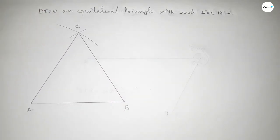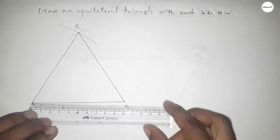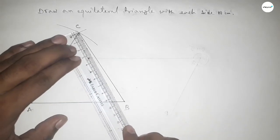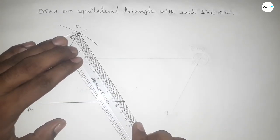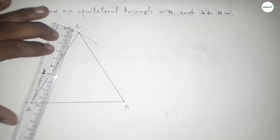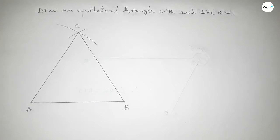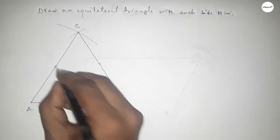Okay, now checking all the sides are equal or not. So this is 10 centimeter, this is also 10 centimeter, and this is also 10 centimeter. So all the sides are equal, so mark equal sign on three sides.